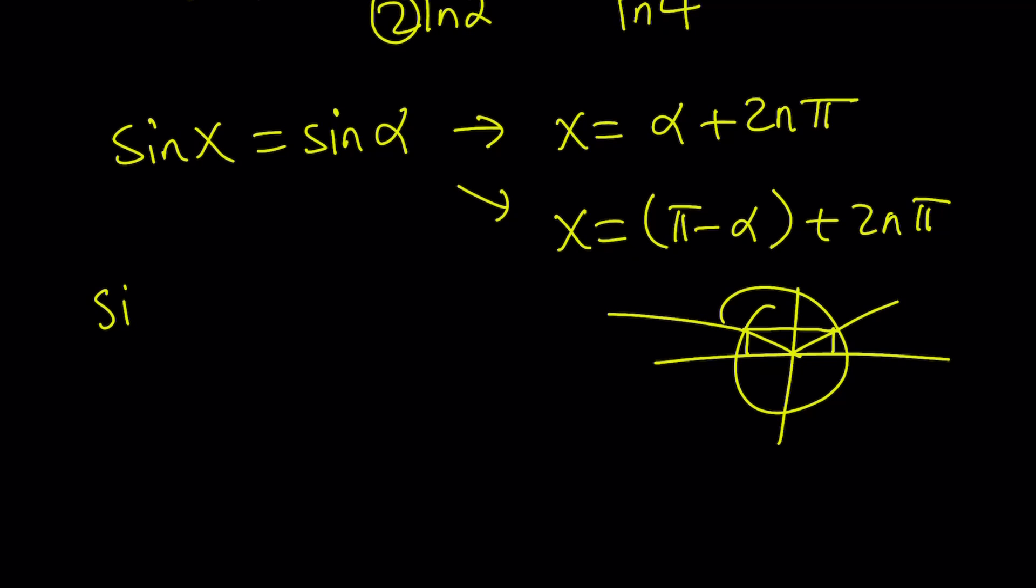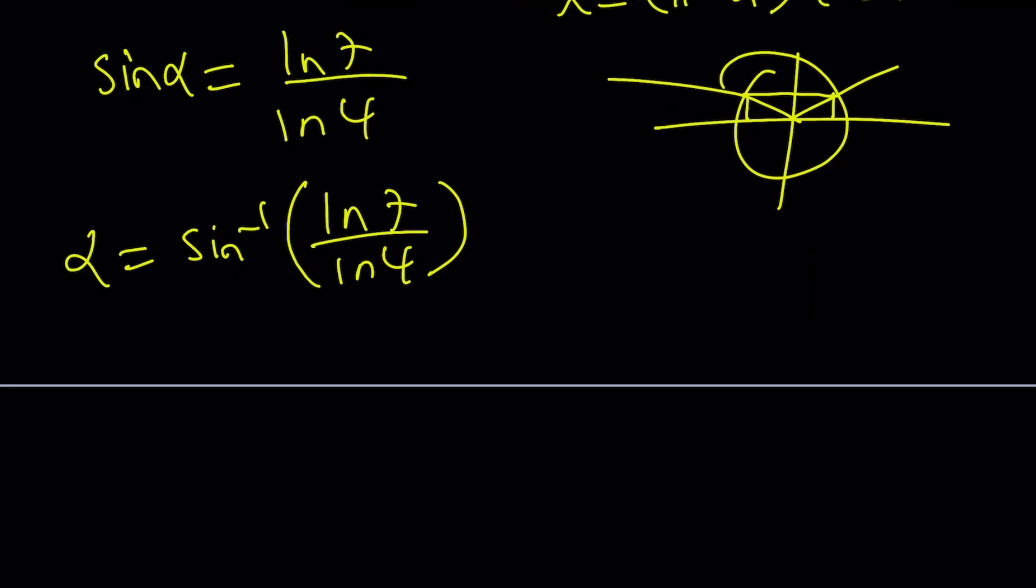Make sense? So what am I saying? I'm saying, let sine alpha be ln 7 over ln 4. So from here, alpha becomes sine inverse of ln 7 over ln 4. So far, so good, right? But here's the problem.